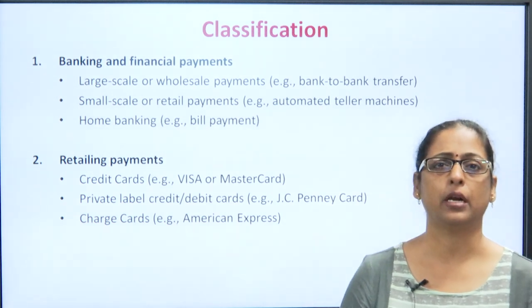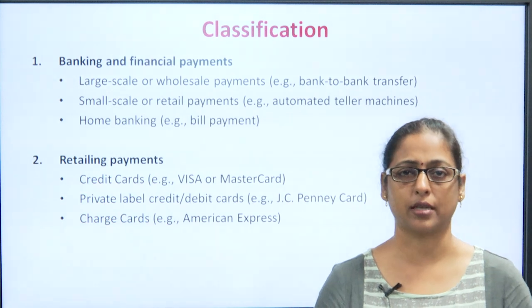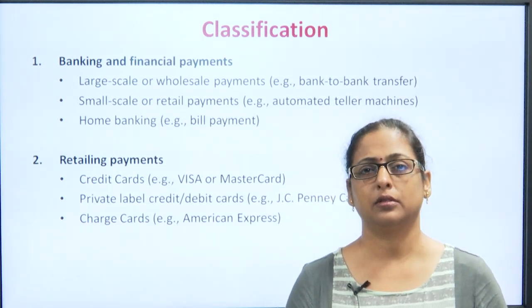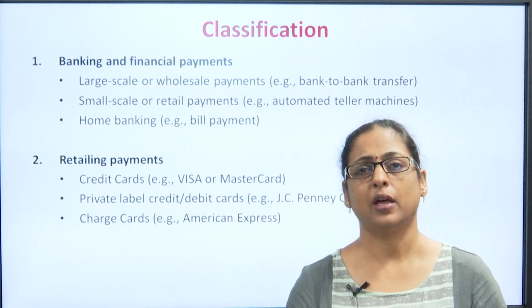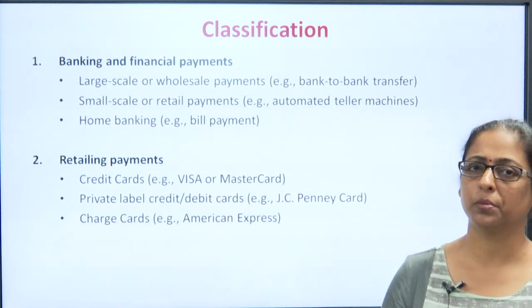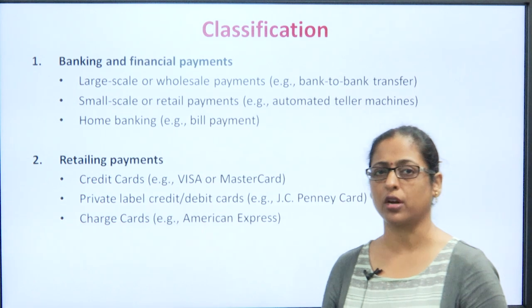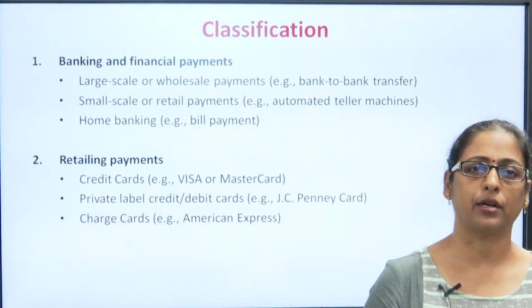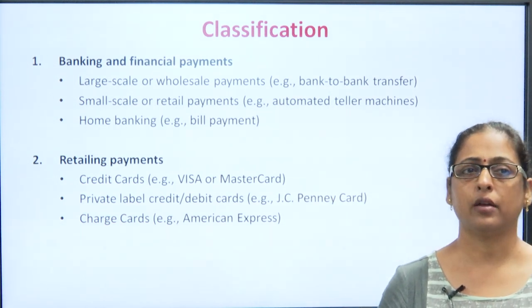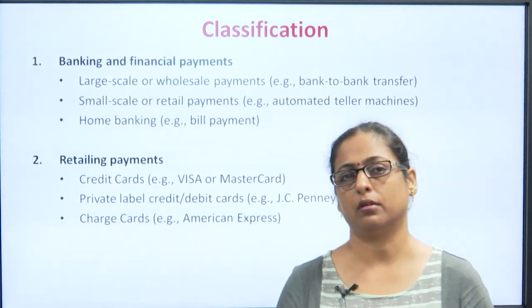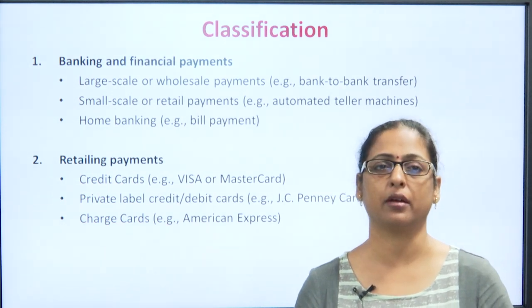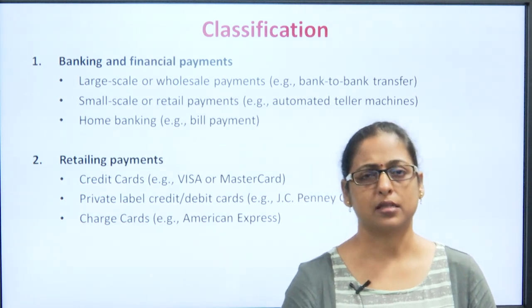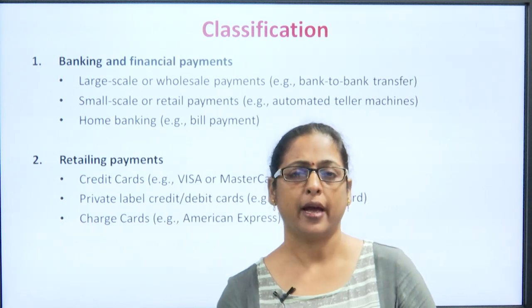Then we have the retail payment system. Retail payment system is basically those payment systems in which small amount of money is transacted by the customer. The purpose of the transaction is totally personal, the number of transactions are large, however the amount transacted is small. For these kinds of purposes, banks and financial intermediaries issue various kinds of electronic payment system methods which includes credit cards offered by MasterCard and Visa organizations. Then we have private label credit cards and debit cards, for example JCPenny cards, and we also have charge cards, the popular ones being American Express. These retail payment options allow all kinds of transactions to be done and customers can use them while shopping or purchasing any kind of product or services online.